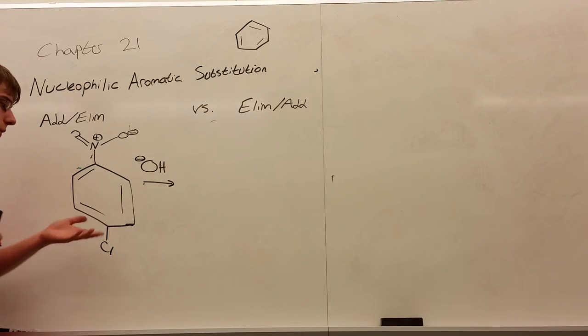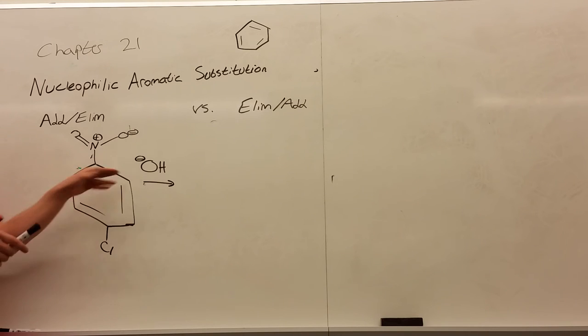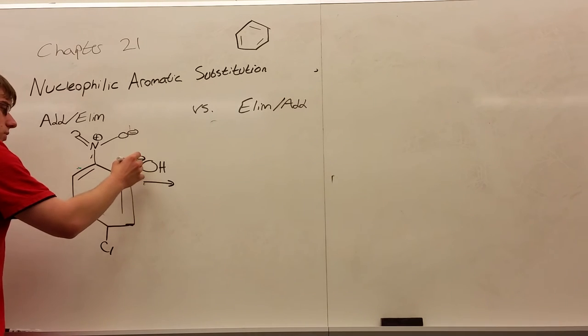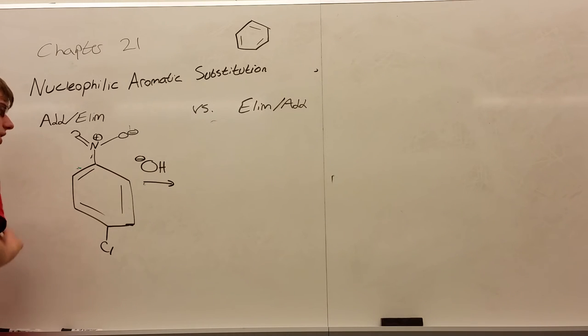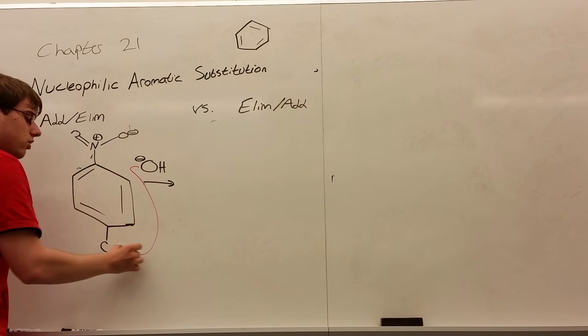for the reason we saw before. We want to make the position positive, the resonance with the nitrogen, and that makes it really attractive for that oxygen to attack. So what's going to happen is this oxygen is going to come in with its electrons and attack the carbon that the chlorine is on.